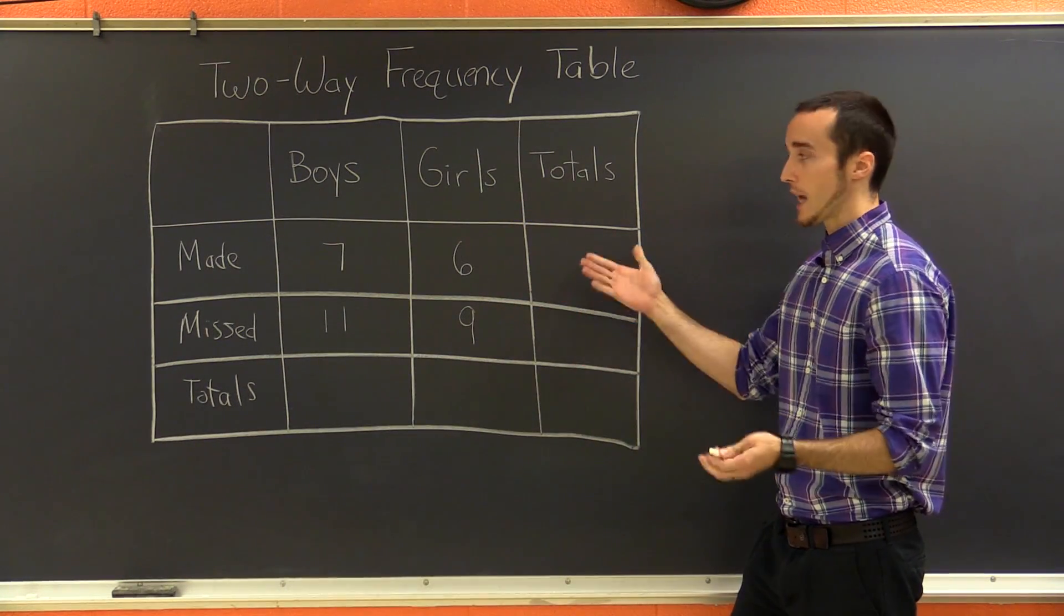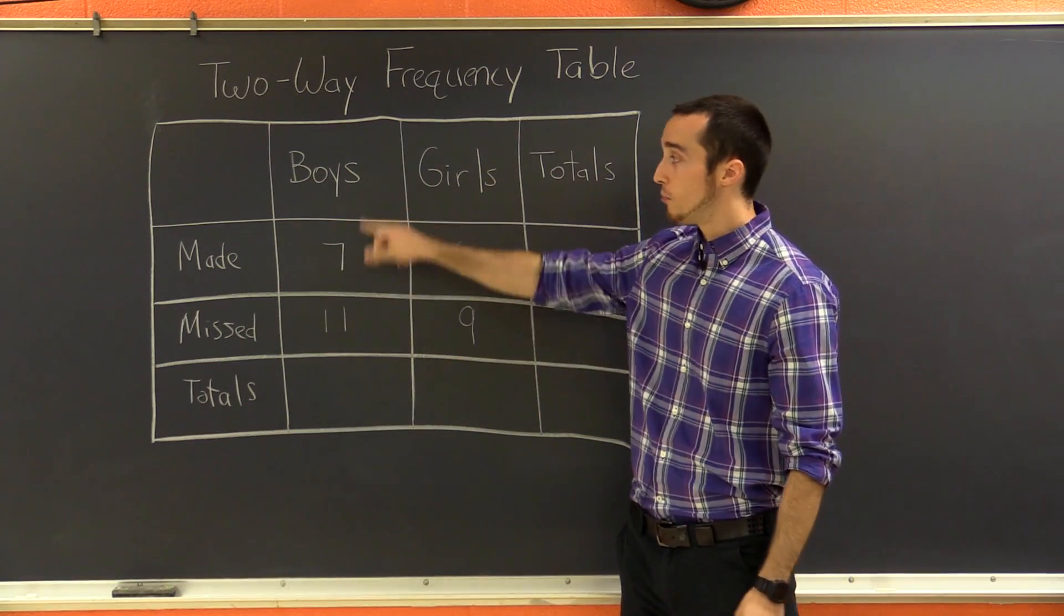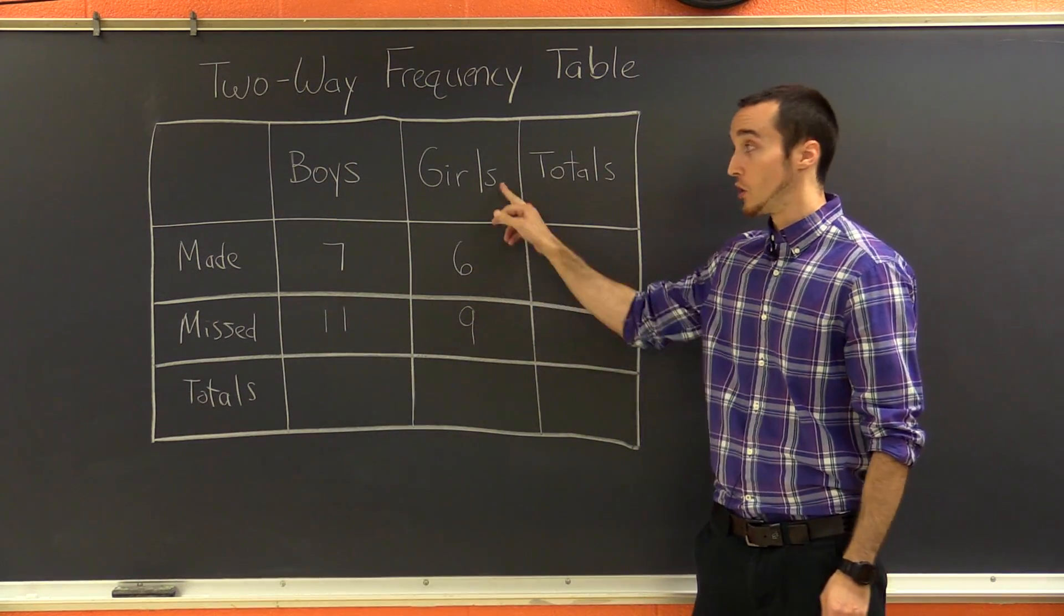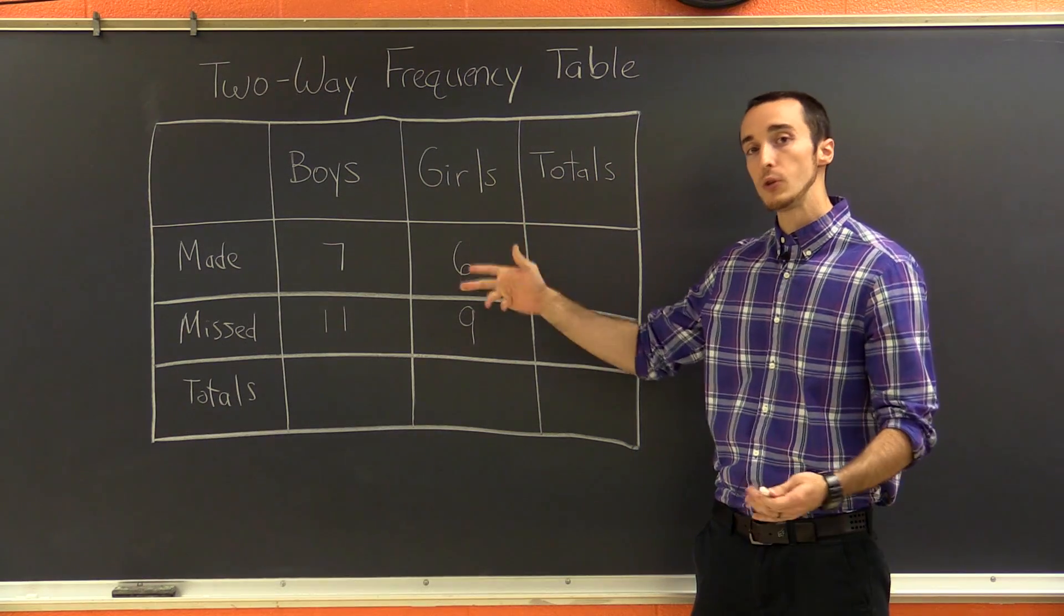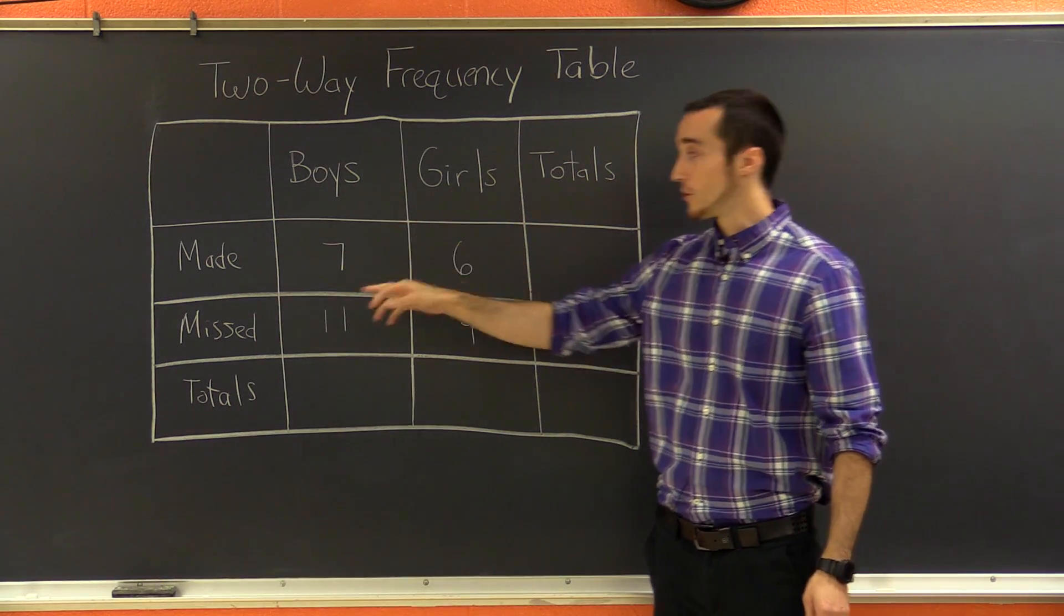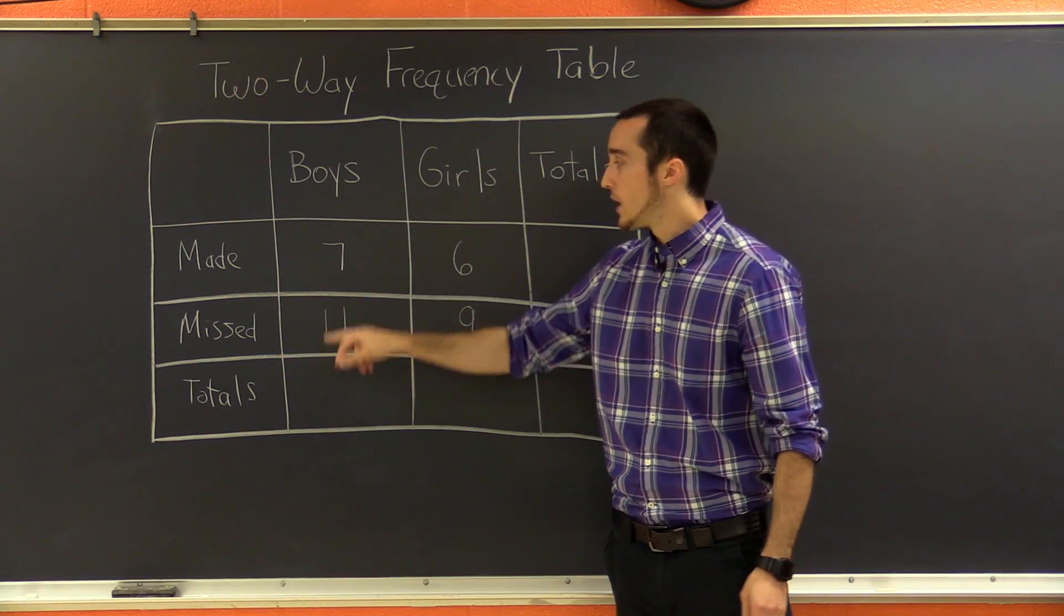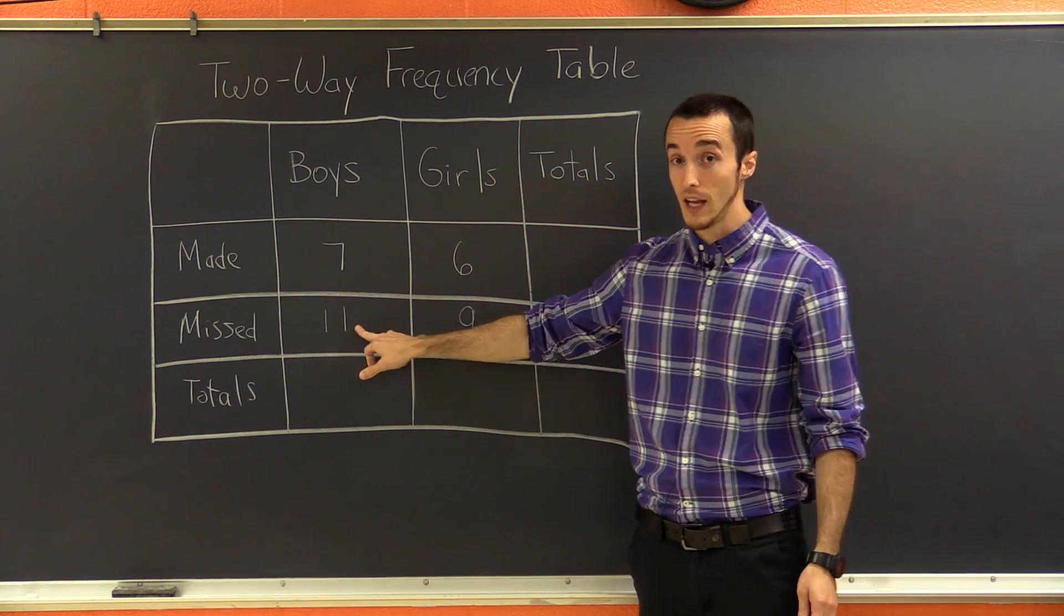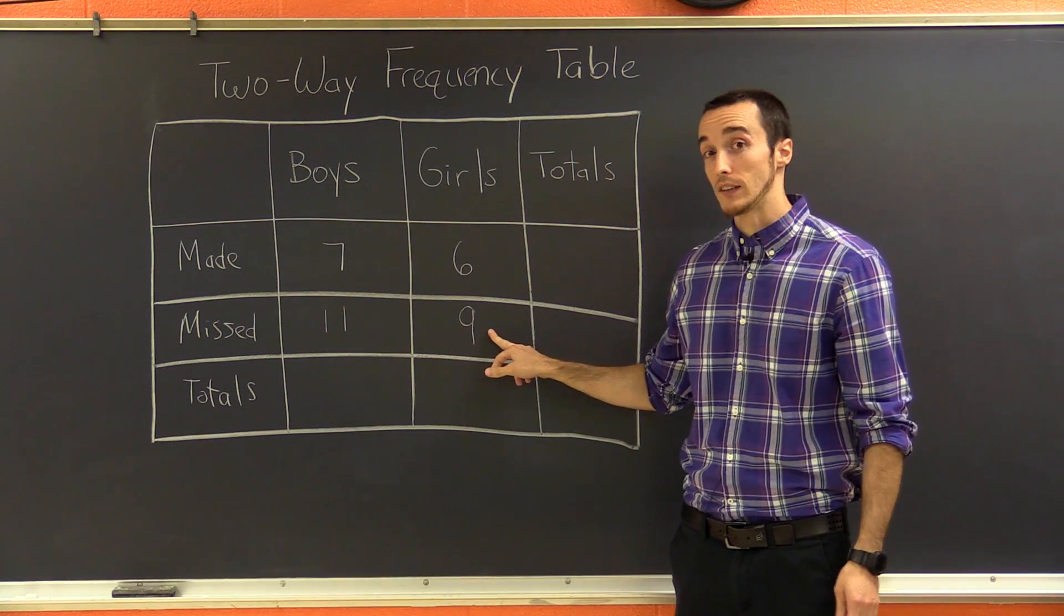So if we counted them all up, there were seven boys who made a basket. There were also six girls who made a basket. What the two-way frequency table enables us to do is not just keep track of boys and girls, but we're keeping track of made and missed. So we also have the data for the boys who missed a basket, which was 11, and the girls who missed a basket, which is 9.